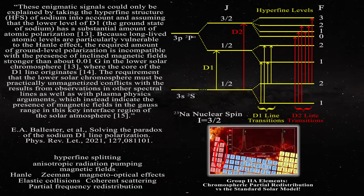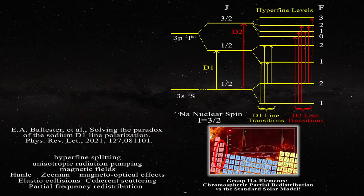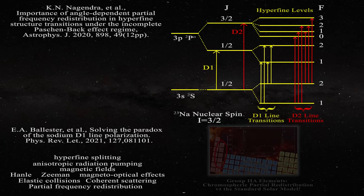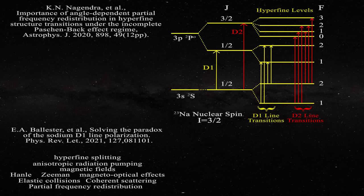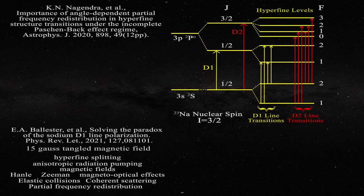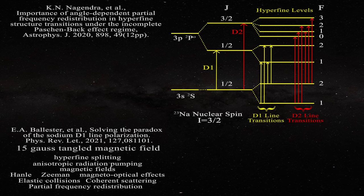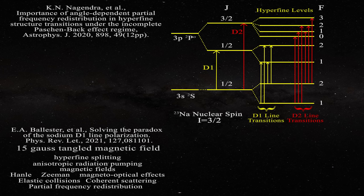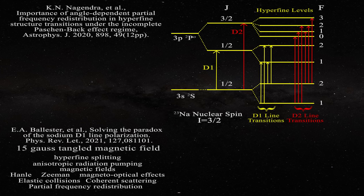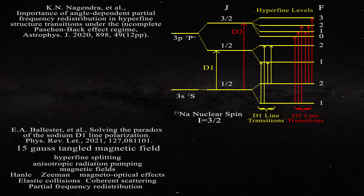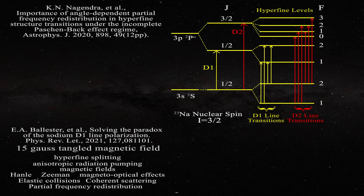In fact, the use of angle dependent partial frequency redistribution is necessary to model both the sodium D1 and D2 lines as can be gathered from this paper. In addressing the paradox of the sodium D1 line, Ballester et al. make use of a 15 Gauss isotropic tangled volume filling magnetic field at the level of the sodium atom in the chromosphere. Now this is an interesting concept as any claim that the sodium D1 line originates from a particular elevation in the chromosphere must be viewed with suspicion.